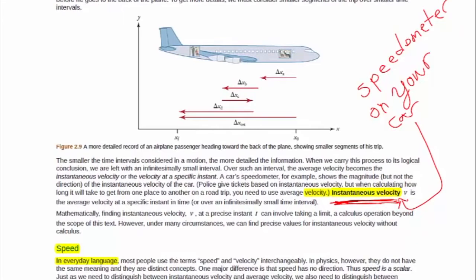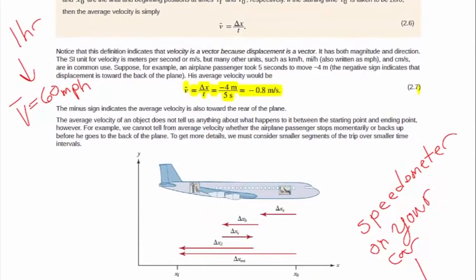Similarly, for speed, you have an instantaneous speed and an average speed. Instantaneous speed is what's shown on your speedometer. Average speed is determined by doing a calculation like this one.